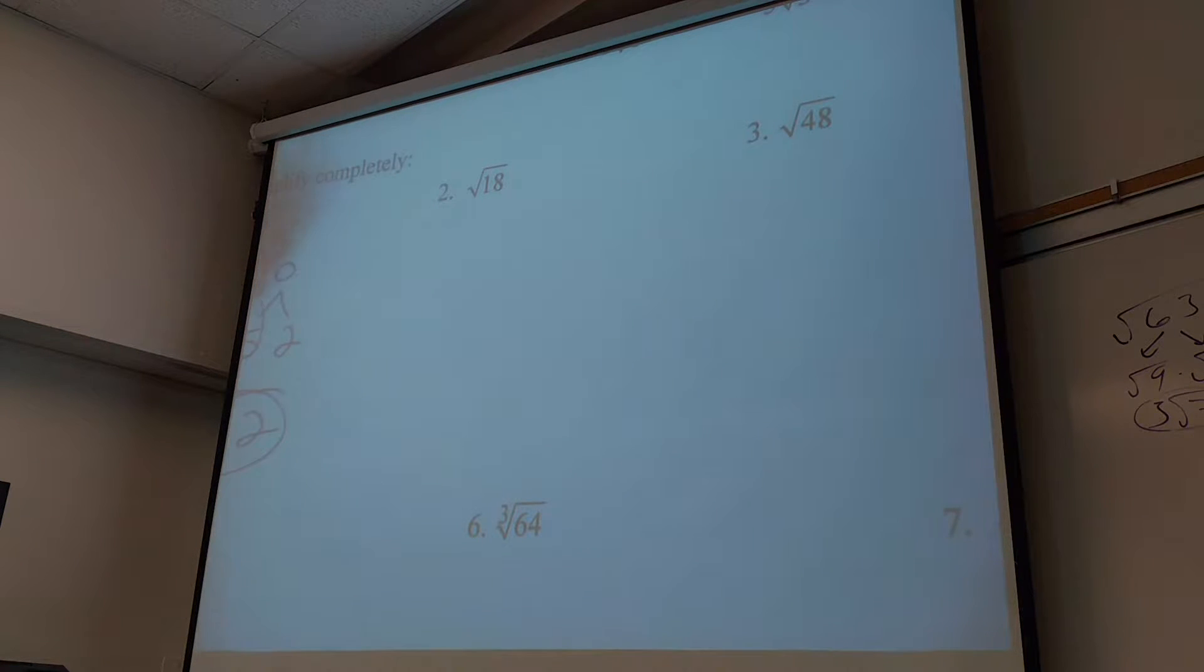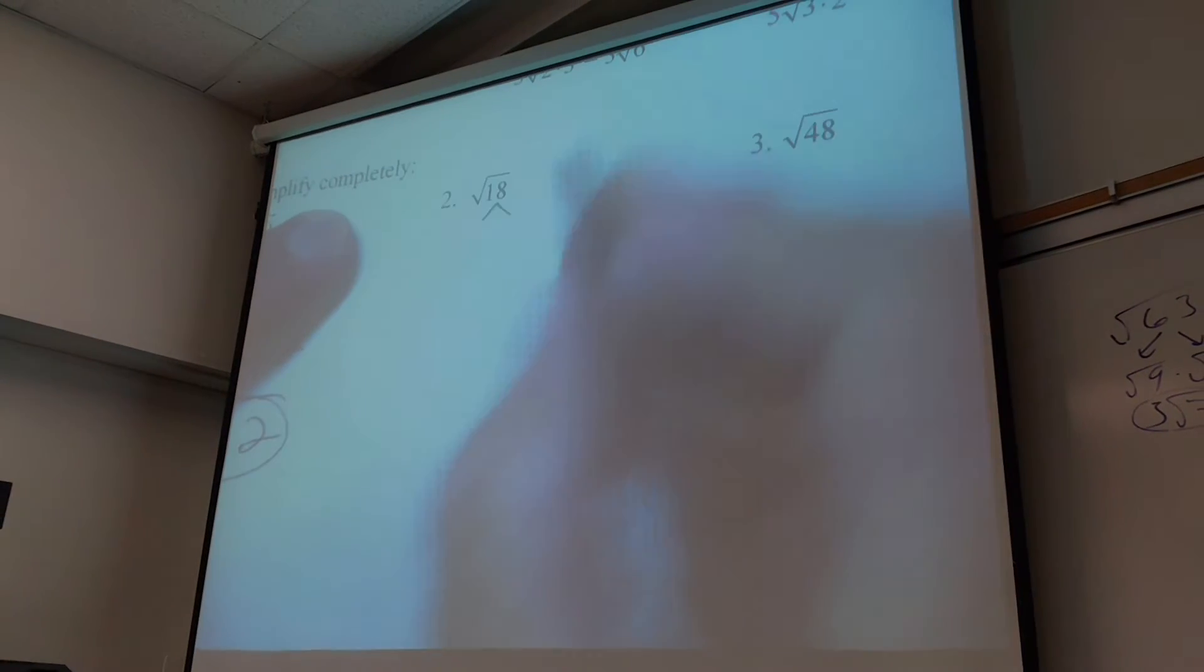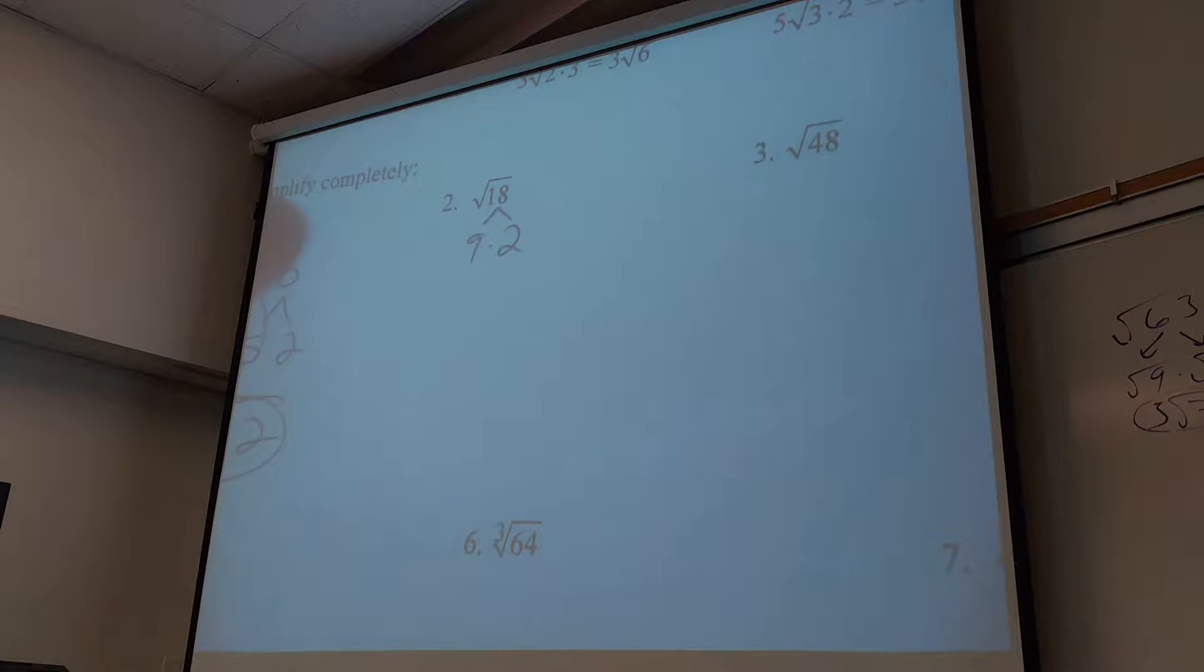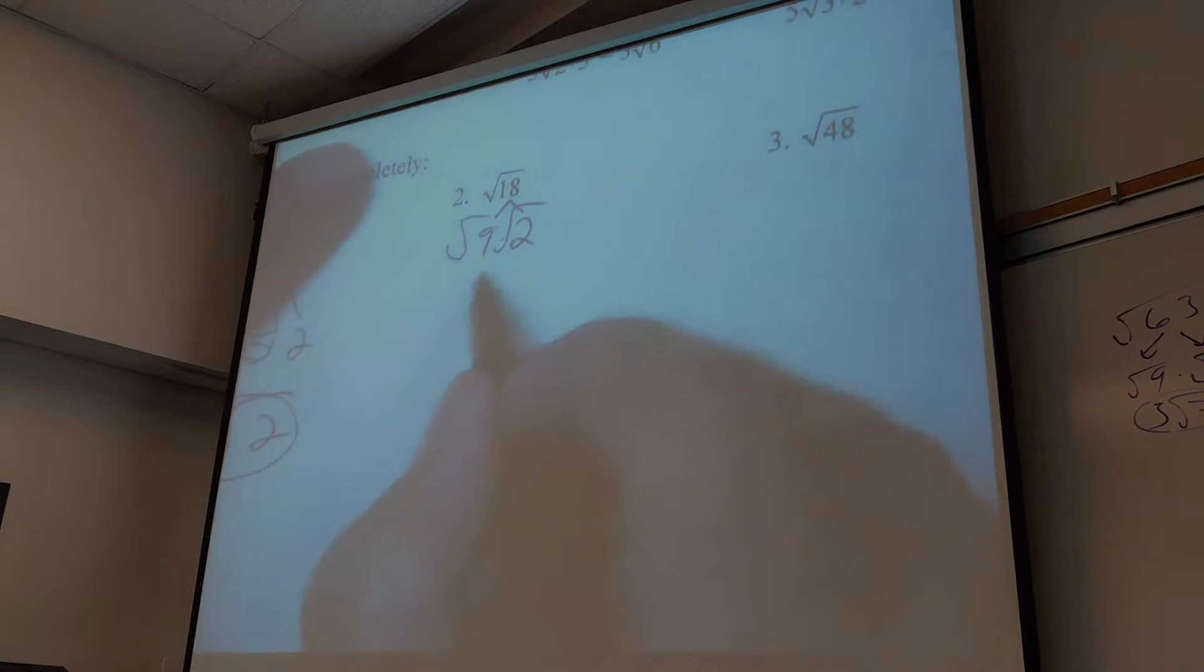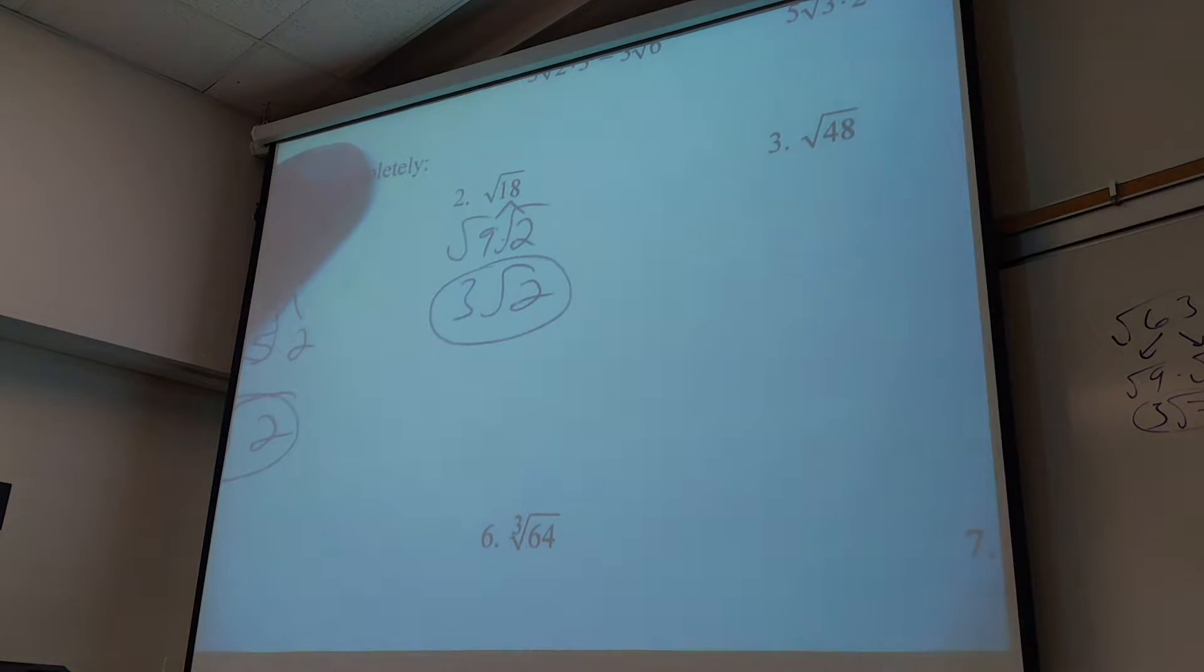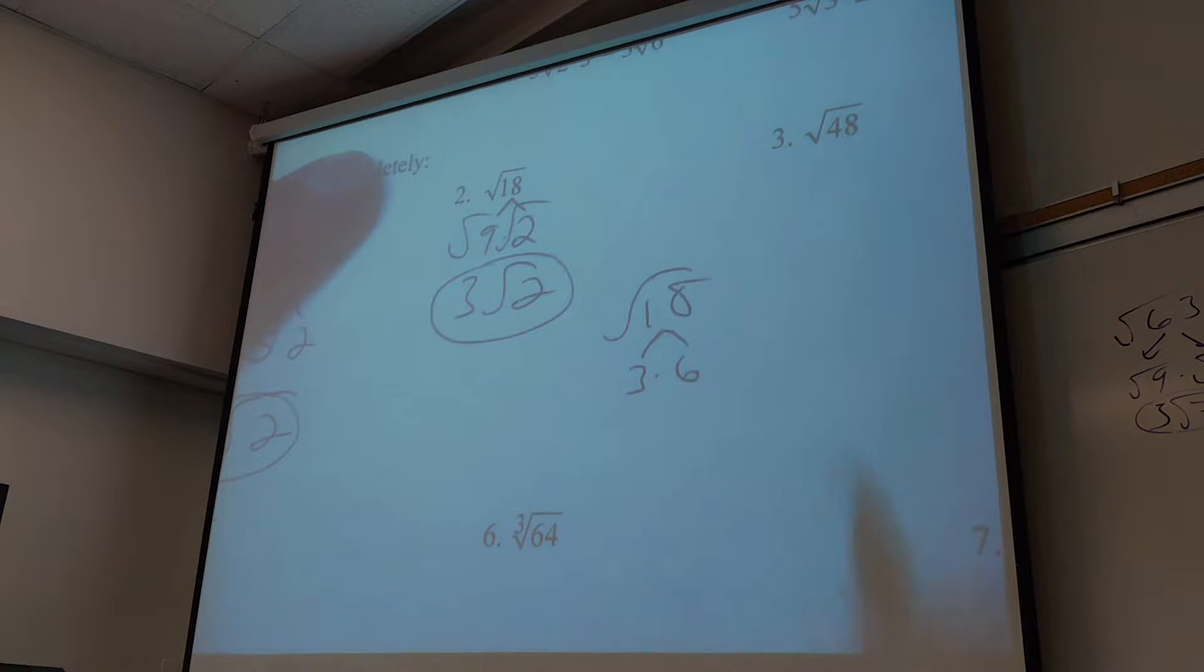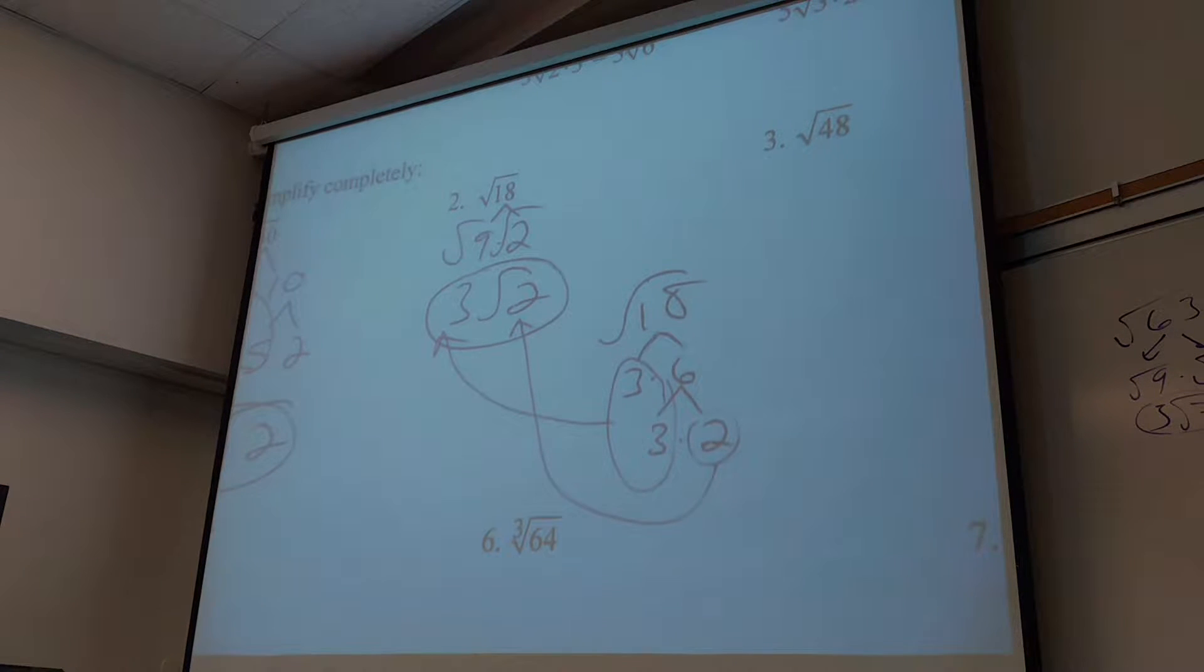What about number two? Which way did you guys do number two? Two and nine. I like it. So one way is method one. Nine is a smart number to use because nine is a square. So I can say square root of nine, square root of two. What's the square root of nine? Three. Square root of two? I don't know. If you did it the other way, you could do three times six is eighteen, and then what's six? Three times two. What do I see two of? Three. So I could put a three out front and the poor little two is left inside. Same answer.